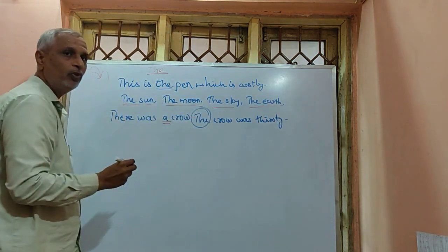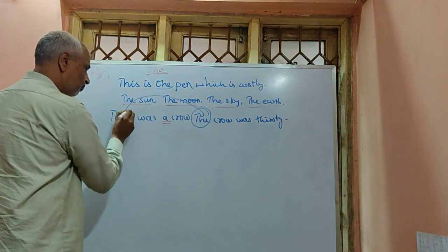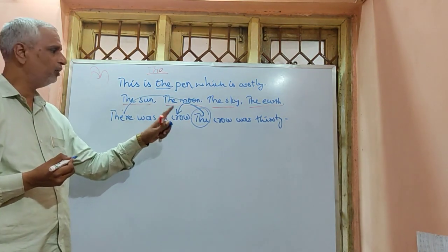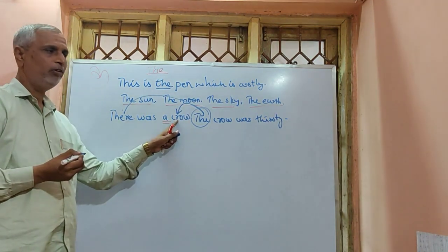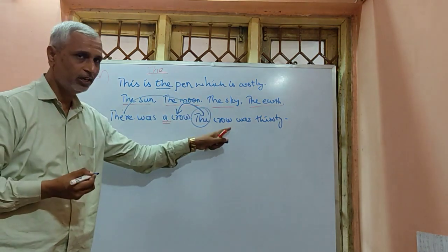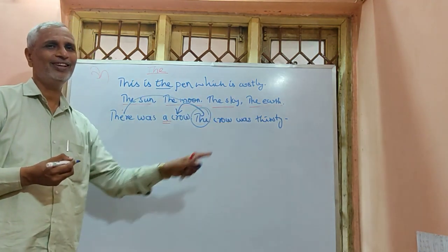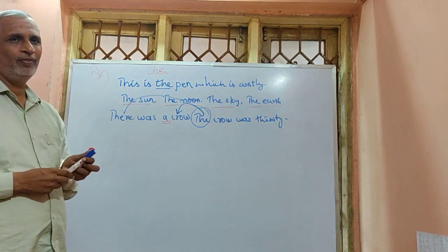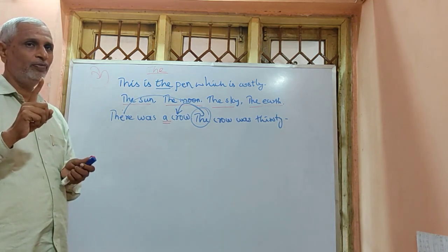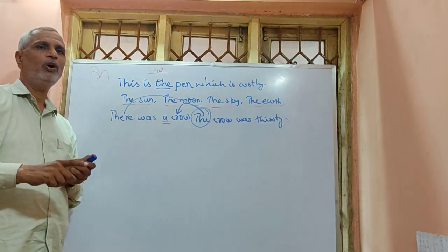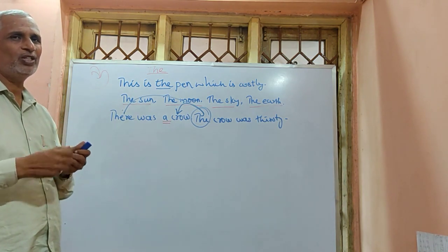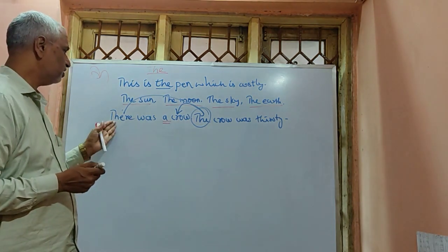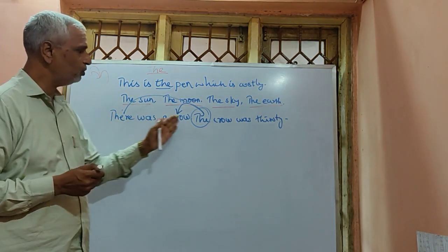Which crow am I talking about? This crow. For the first time we use indefinite articles. When it refers to the same person for the second time, we use article 'the'. For example: 'I saw an old man in the market. The old man was very strong.' It shows definiteness.